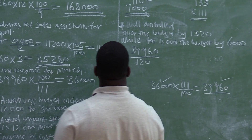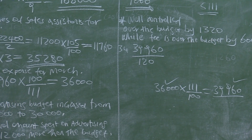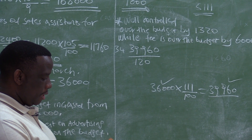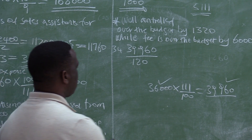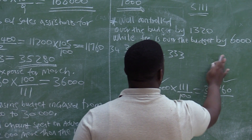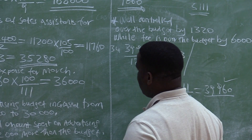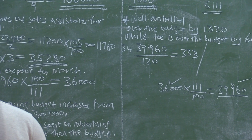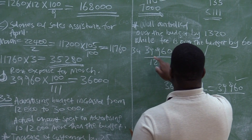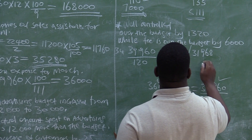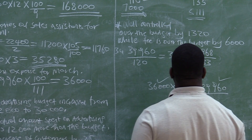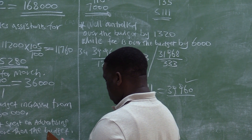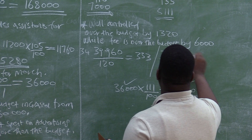We are renting 120 square meters. So we want to know how much each square meter costs: $39,960 divided by 120 square meters equals $333 per square meter. If we now look at the actual amount paid for rent, it is $31,968. Dividing $31,968 by $333 per square meter gives us 96 square meters.